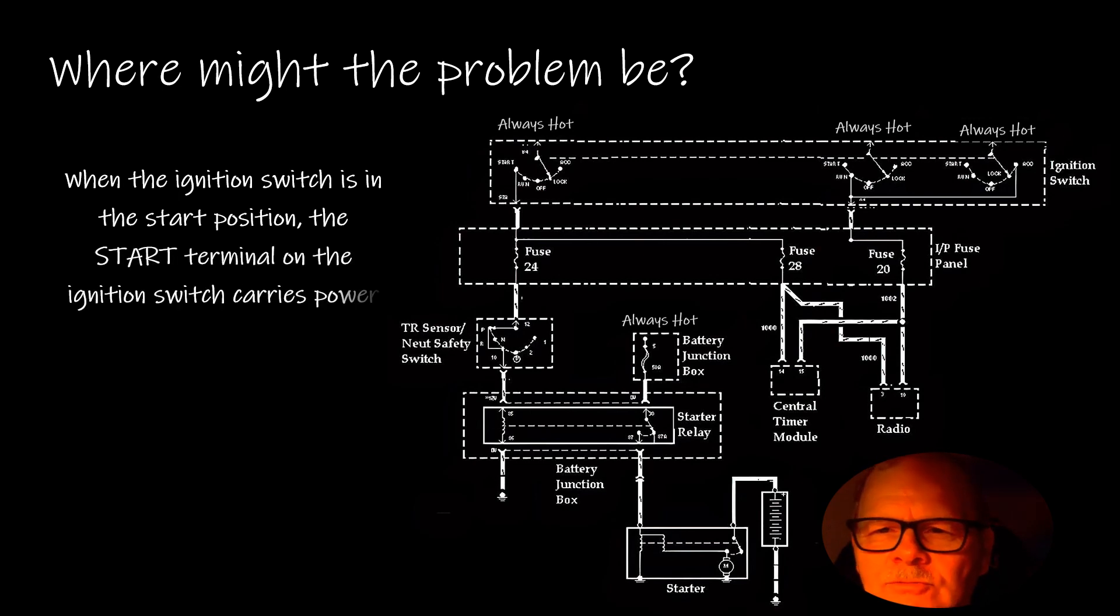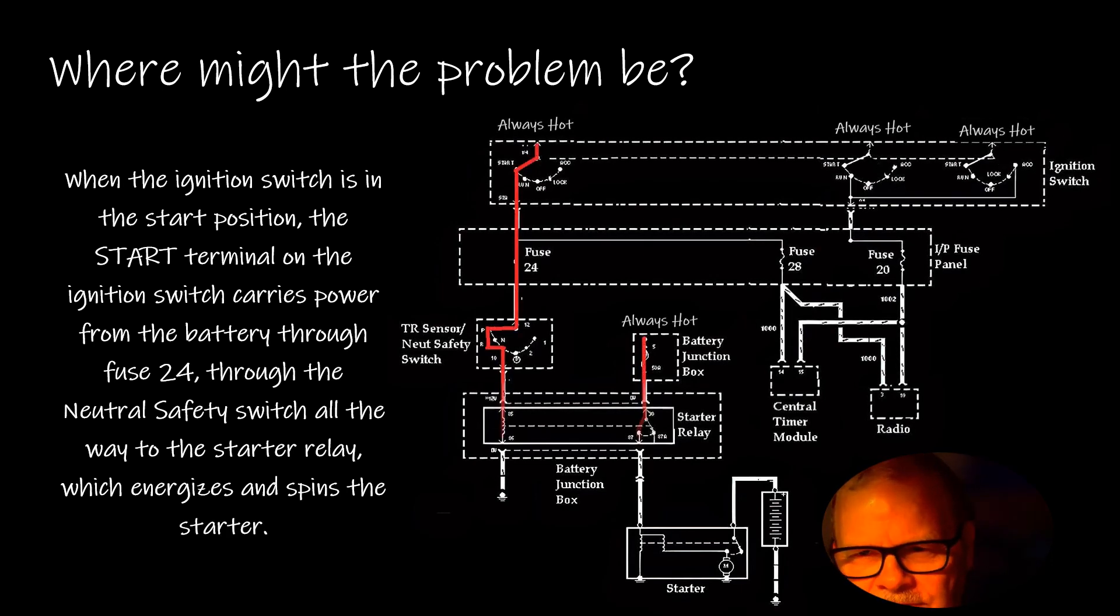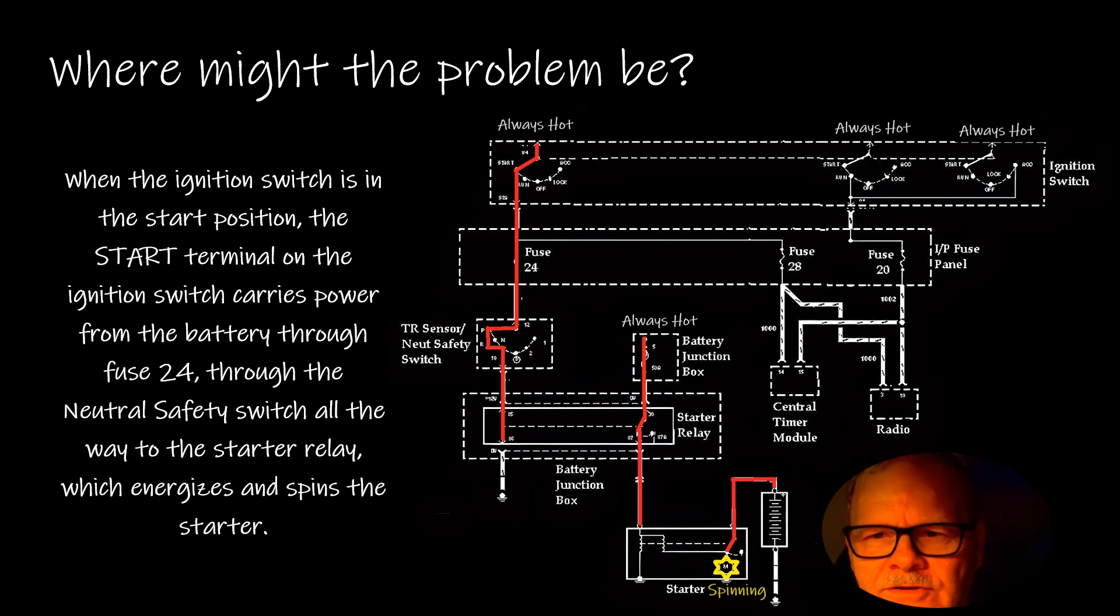With the ignition switch in the start position, the start terminal on the switch carries power from the battery through fuse 24, through the neutral safety switch all the way to the starter relay, which energizes and spins the starter. You see how that circuit works - not complicated at all, very simple.